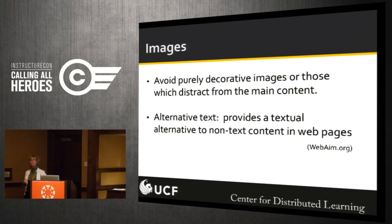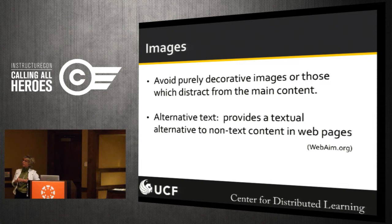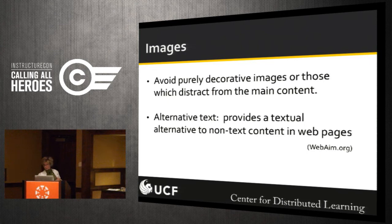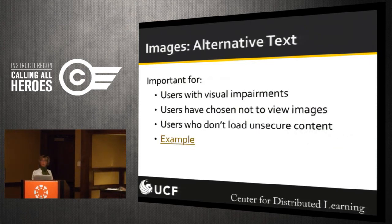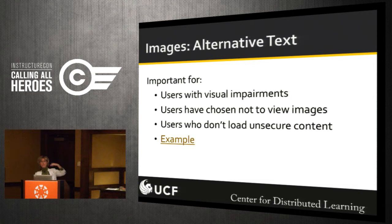Canvas is nice in that it always has an alternative text area, but it defaults to the name of the image file. So there's always something there, but the filename usually isn't descriptive enough for someone who can't see the image to understand what it meant or why it's in the course. Alternative text is also important for people who've chosen not to view images to speed up loading, or those who don't want to load unsecure content.